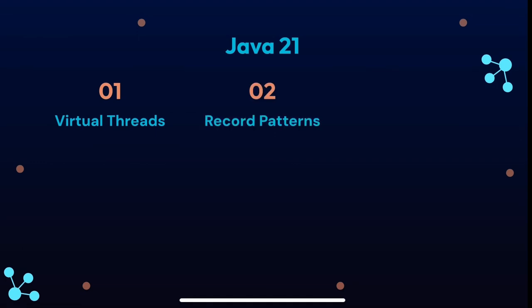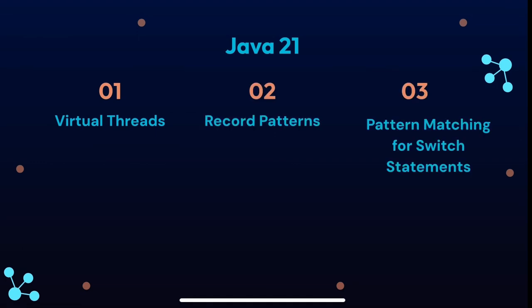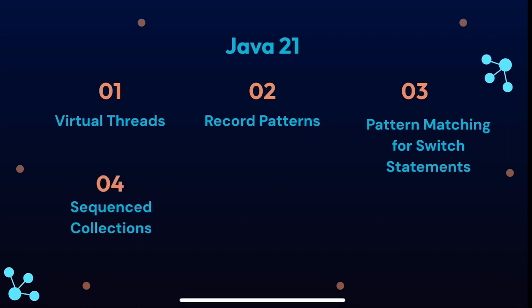The second one is record patterns. The third one is pattern matching for the switch statement. The fourth one is sequence collections. The fifth one is string templates.